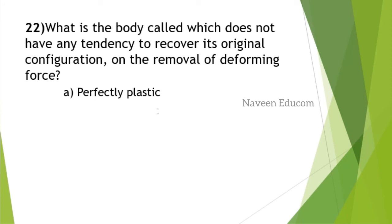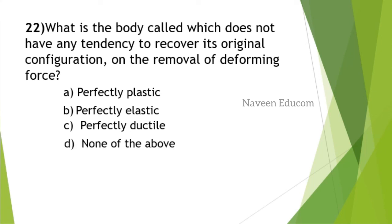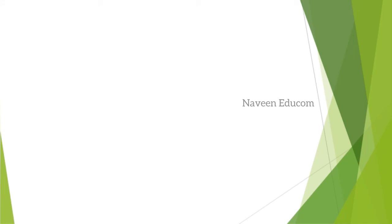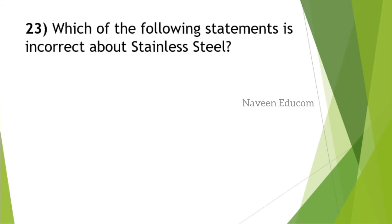What is the body called which does not have any tendency to recover to its original configuration on the removal of deforming force? You study this in your 11th standard NCERT physics textbook in the portions of elastic properties of solids. If it does not at all return to its original place, it is perfectly plastic. Perfectly plastic means the body does not have any tendency to recover to its original configuration. Some important examples are also given. Perfectly elastic means it will be deformed and return. Ductile means it can be drawn into thin wire.